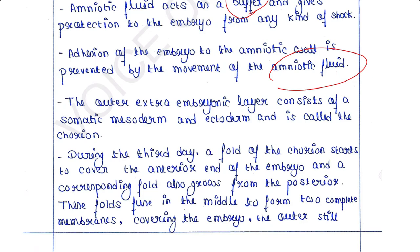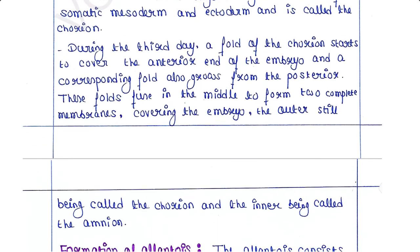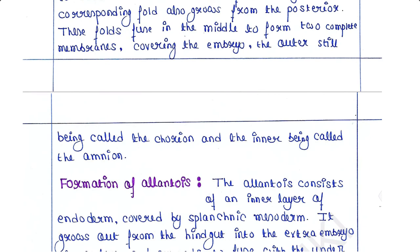Adhesion of the embryo to the amniotic wall is prevented by the movement of the amniotic fluid. The outer extra-embryonic layer consists of somatic mesoderm and ectoderm and is called the chorion. During the third day, a fold of the chorion starts to cover the anterior end of the embryo, and the corresponding fold grows from the posterior. These folds fuse in the middle to form two complete membranes — the outer being the chorion and the inner being the amnion.